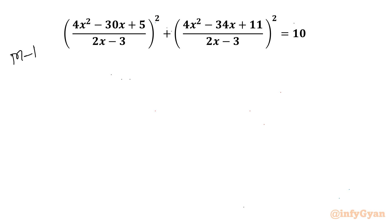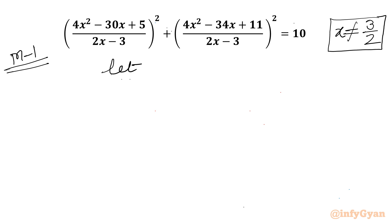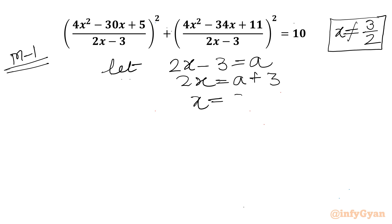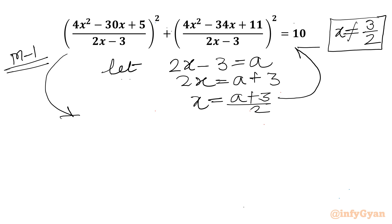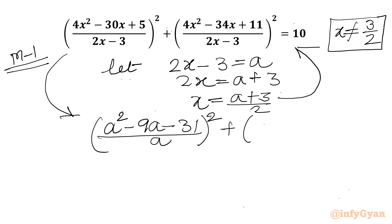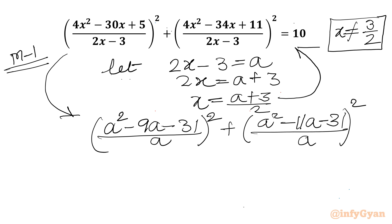Let me begin with Method 1. First, x cannot be equal to 3/2, as our denominator cannot be 0. Now let us consider 2x minus 3 equal to a. So 2x equals a plus 3, or x equals (a + 3)/2, which we will apply in the original equation to get an equation in variable a. The equation will be (a² - 9a - 31)/a² plus (a² - 11a - 31)/a² equal to 10.